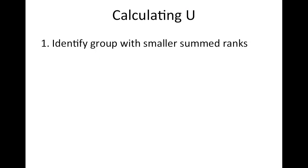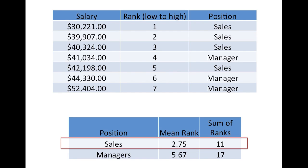The first step in calculating the U after this is to identify the group with smaller-summed ranks, which in this case, the salespeople have the smaller rank, 11, compared to 17 for the managers.